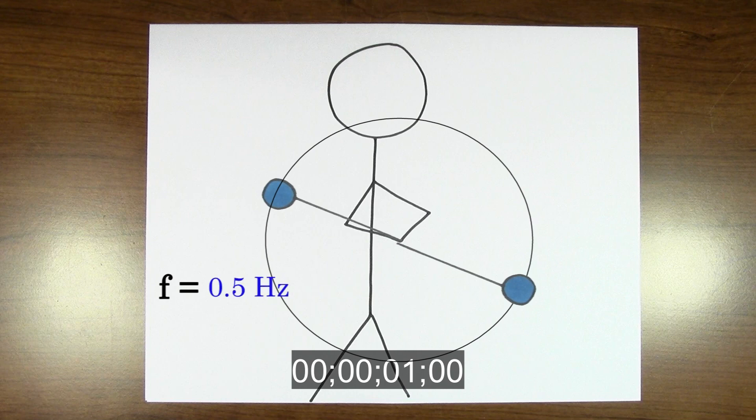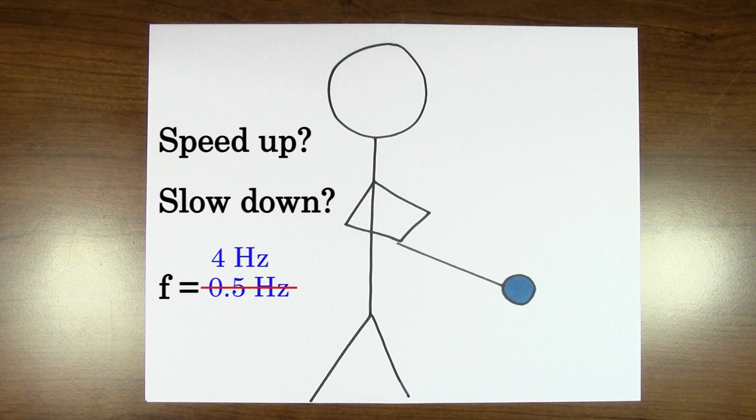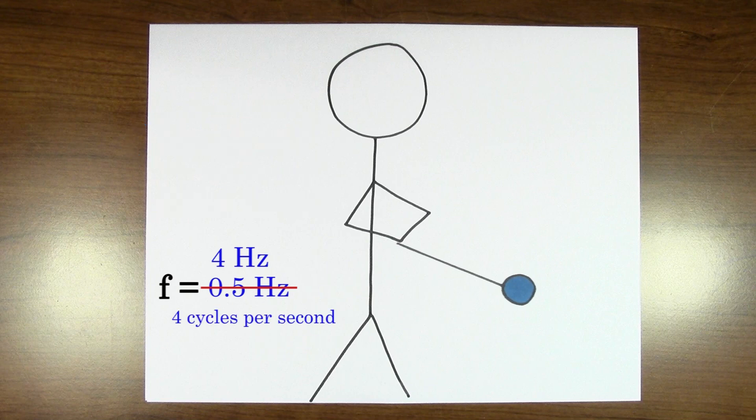What would happen if we increase the frequency of this yo-yo to 4 hertz? Would the yo-yo speed up or slow down? This time, increasing the frequency to 4 hertz really does speed up the yo-yo. 4 hertz means 4 cycles per second or 4 revolutions per second. So now the yo-yo moves through 4 circles every second.